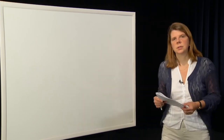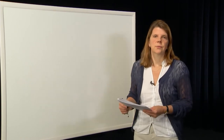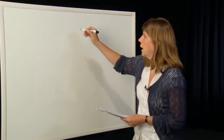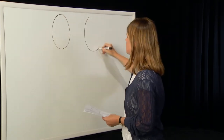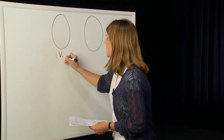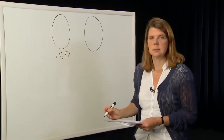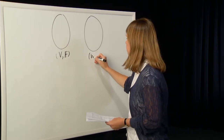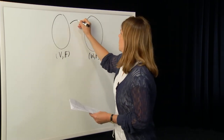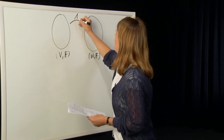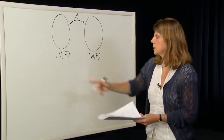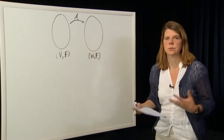We're going to start with the notation we discussed in an earlier module: maps between vector spaces. Suppose we have two vector spaces — a vector space V over a field F, and a vector space W also defined over the same field F. I'm going to define a map, and I'll use script A to represent the map which takes elements of V to elements of W.